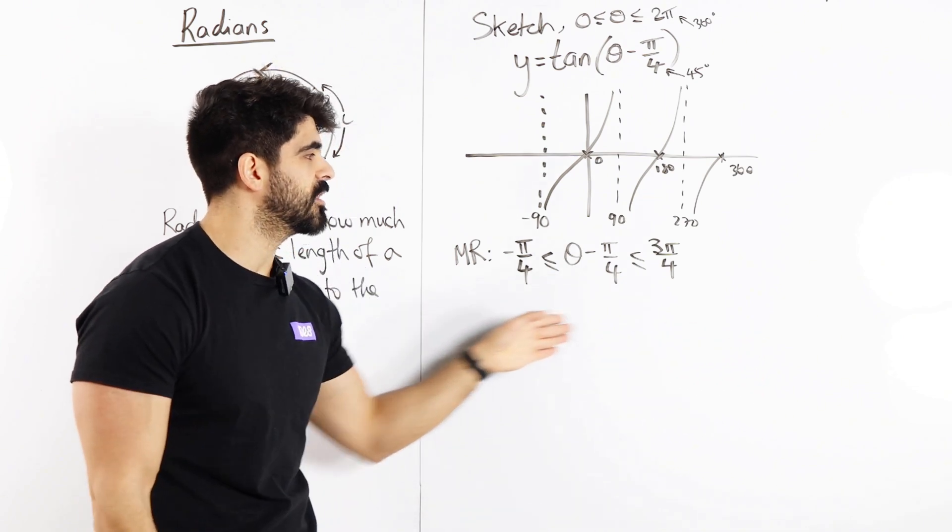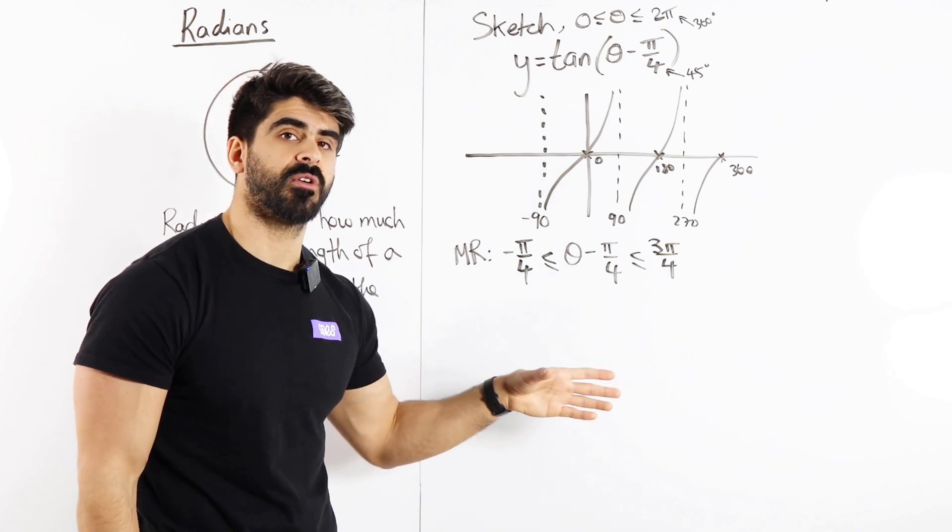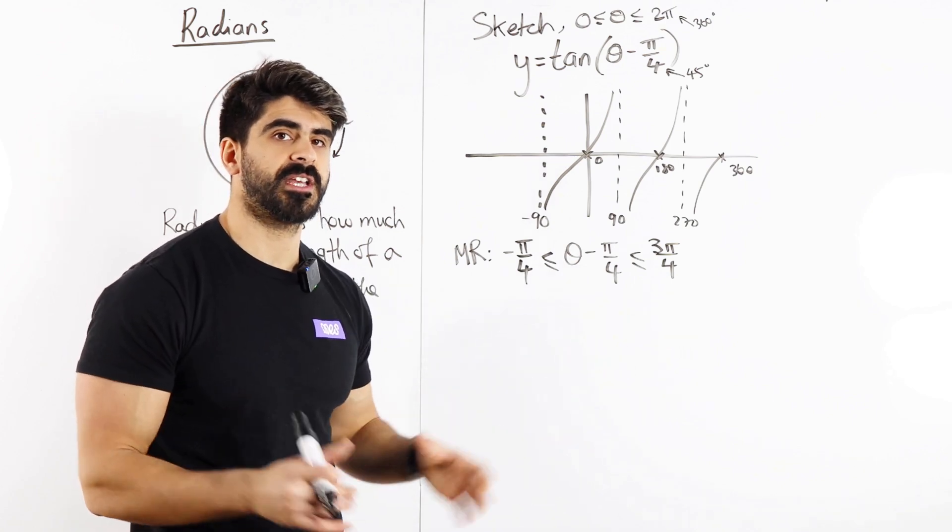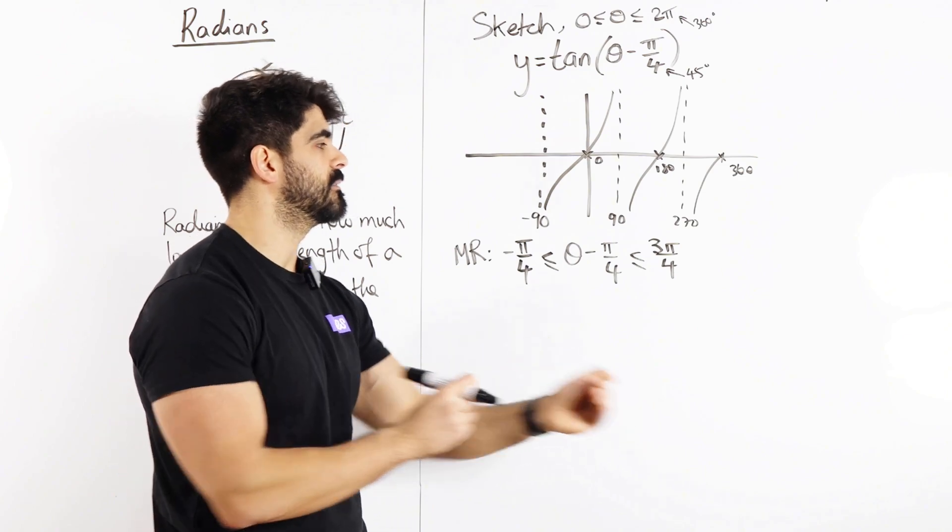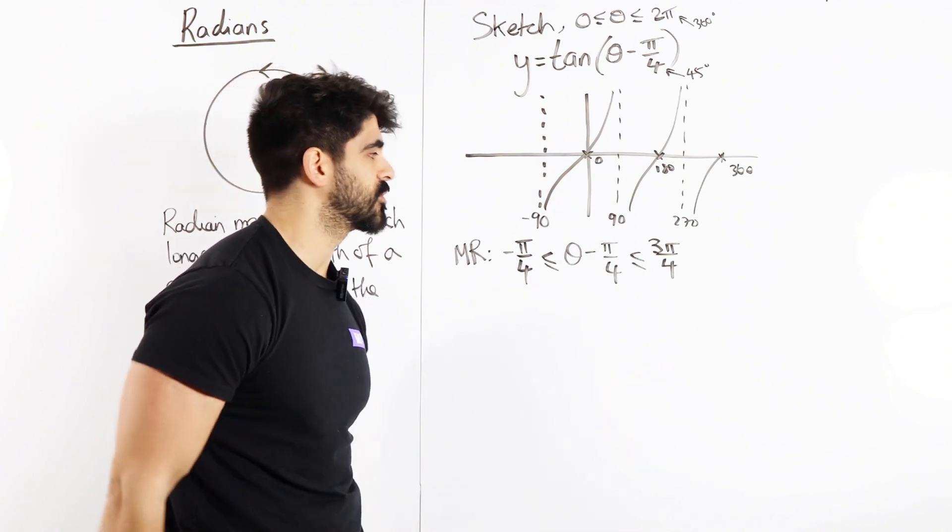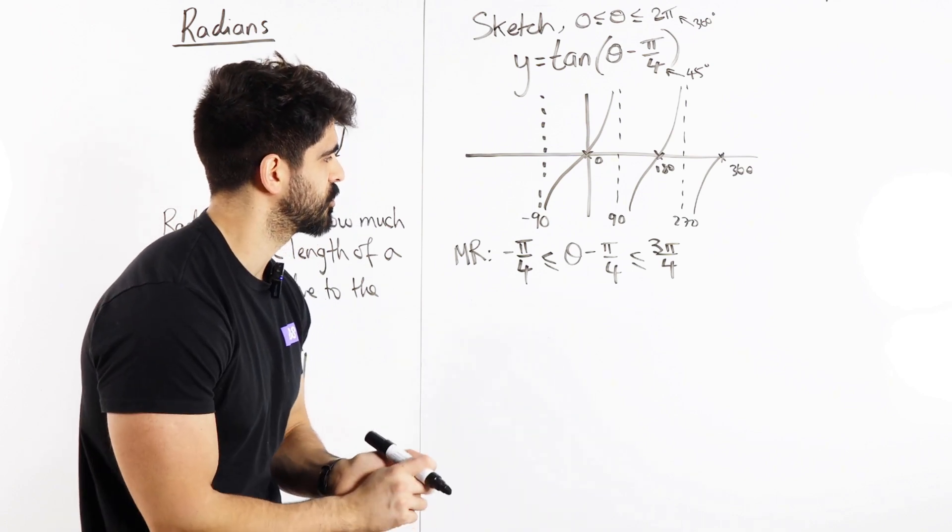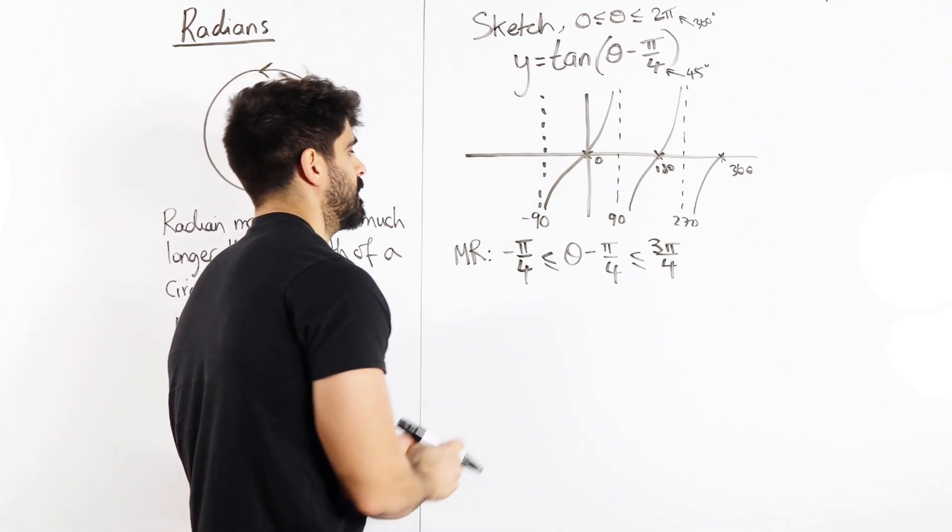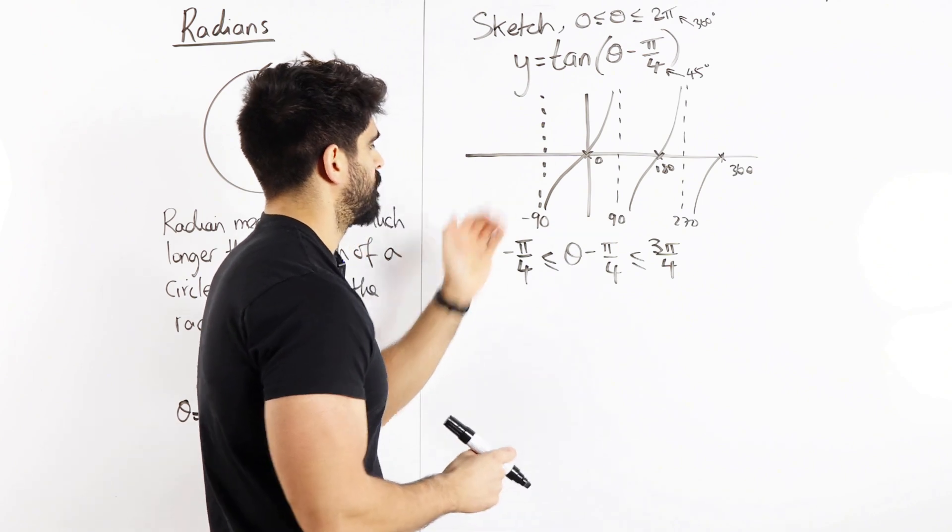So what we're going to do is, within the modified range, we're going to draw the tan graph and only the appropriate section that is going to move it to the right by pi over 4. So this stops you guys from drawing too much. How do we do that? Let's look over here.